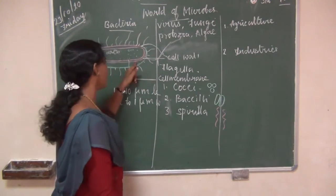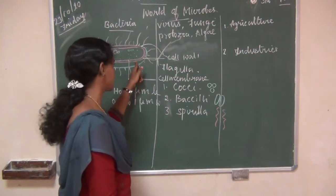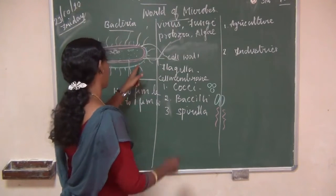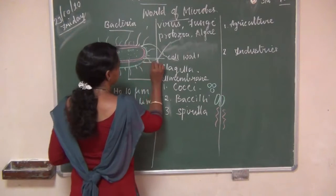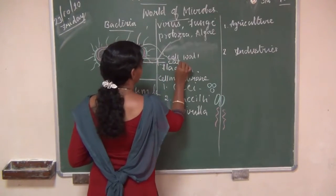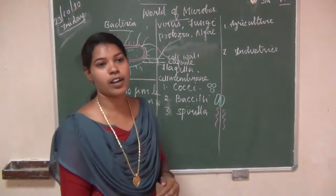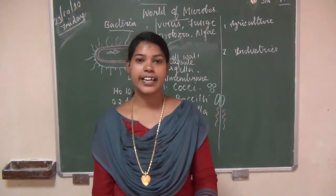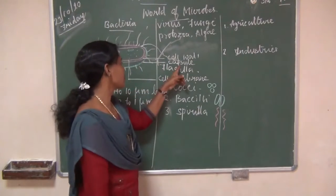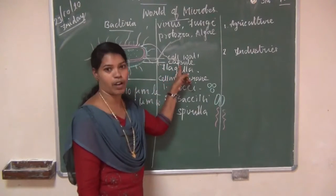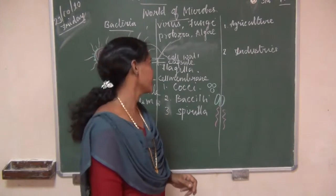Outside the cell wall, there is an additional protective layer called the capsule. This capsule is made up of polysaccharide.